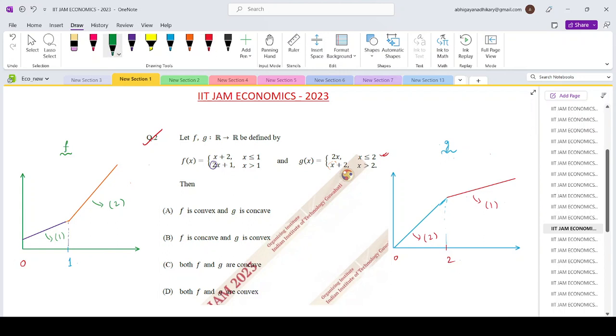So since this is facing away from the origin, this one is basically convex. And this one is facing towards the origin, towards the x axis. So that means this is basically concave. So if you look at the options, F is convex and G is concave, which is given by option number A.